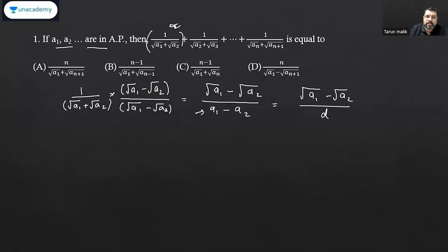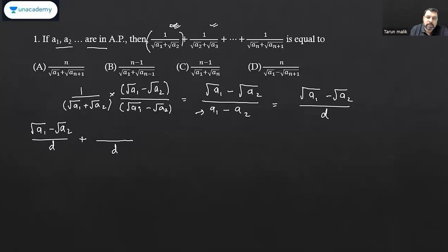So the first term is (√a₁ − √a₂) / d. Applying the same concept to the second term, the denominator is still d and the numerator is (√a₂ − √a₃). Similarly, the next term is (√a₃ − √a₄) / d, and this continues until the last term, which is (√aₙ − √a_{n+1}) / d.